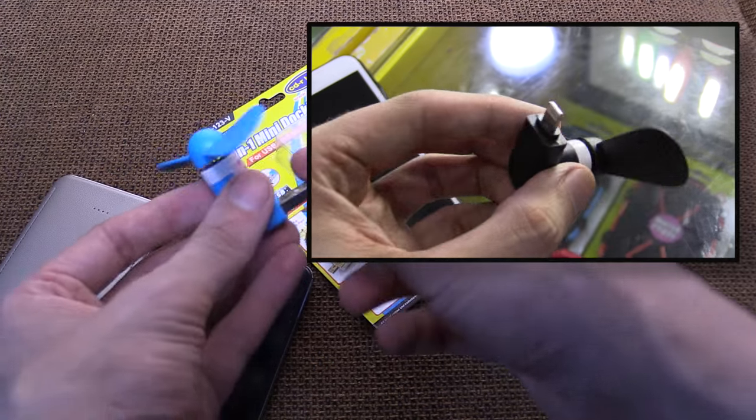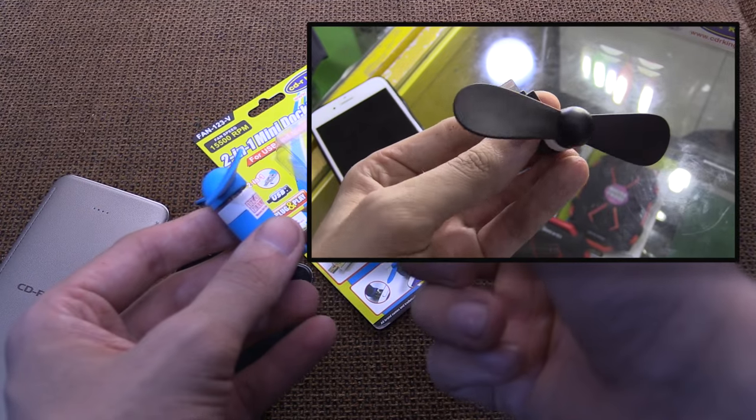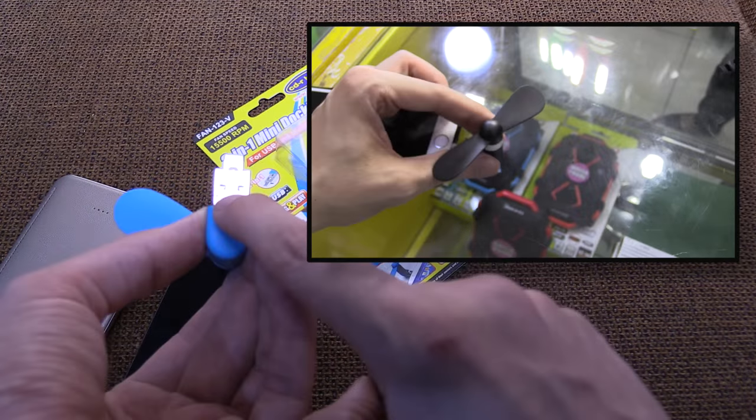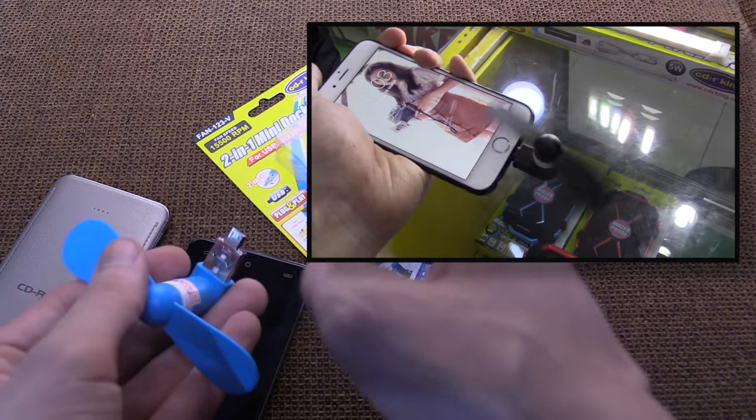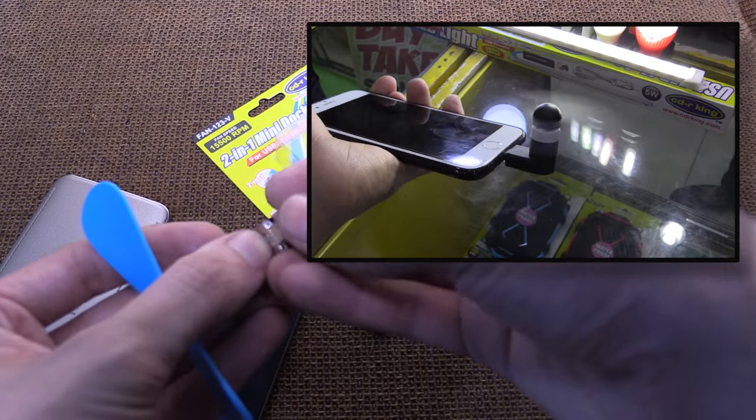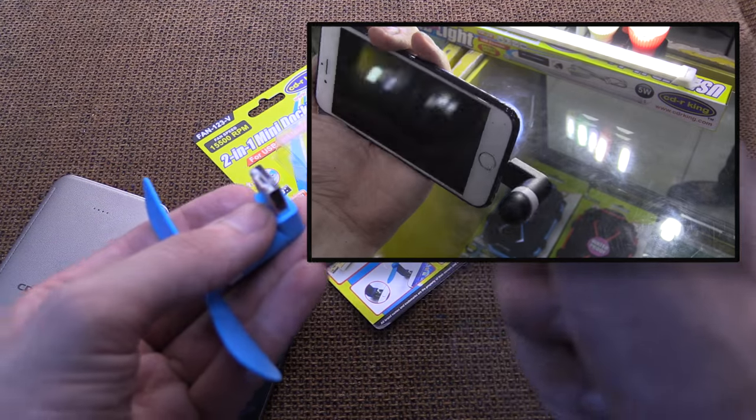And they do also make a lightning cable one that plugs into your iPhone but it's lightning cable only. It doesn't have the USB adapter. So if you want one for your iPhone they do make it but it will only run on your iPhone. Whereas this one can run on micro USB or regular USB.